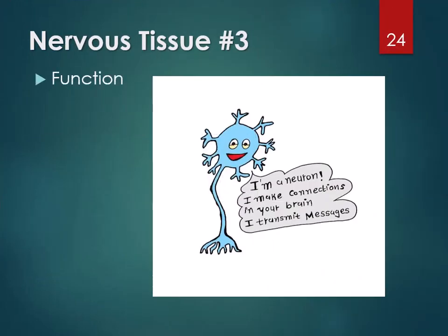Neurons function to send impulses to the brain, and from the brain they send information back to effectors telling them what to do.